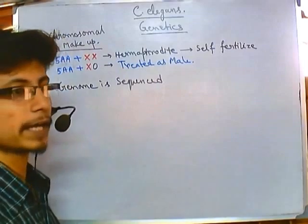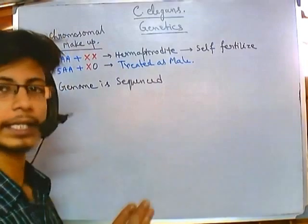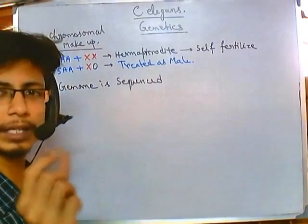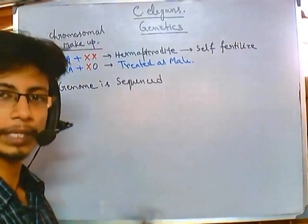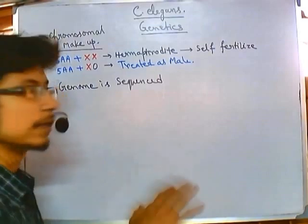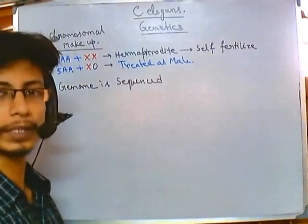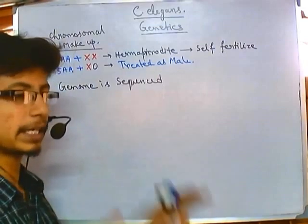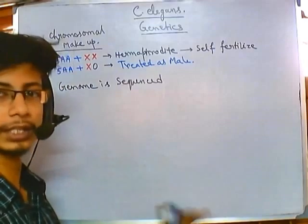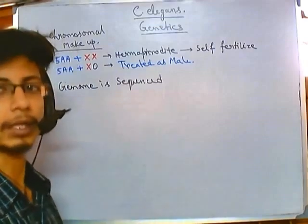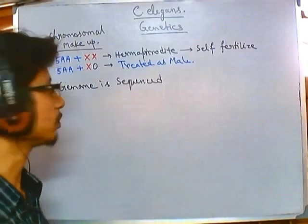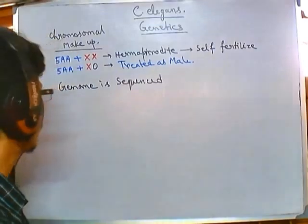In fact, at 1998 some little bit of work was left, which was completely done in 2004. So the complete, confident sequence of C. elegans was finalized in 2004.